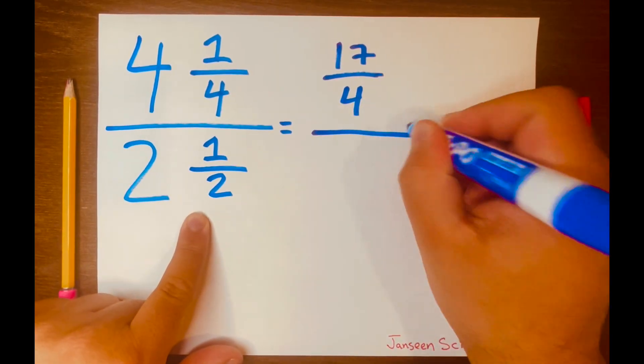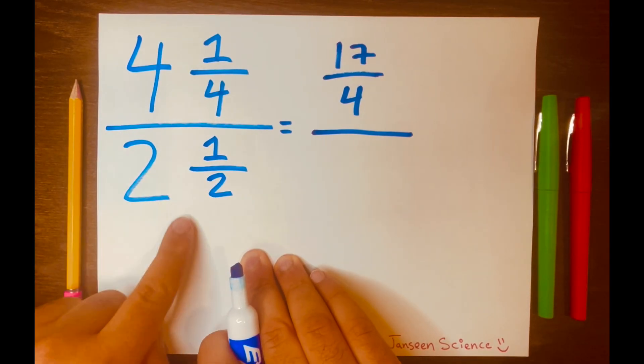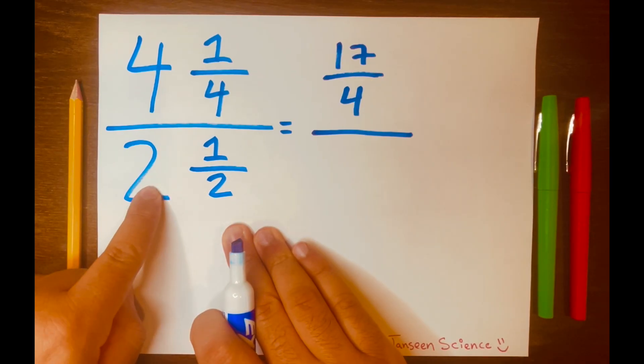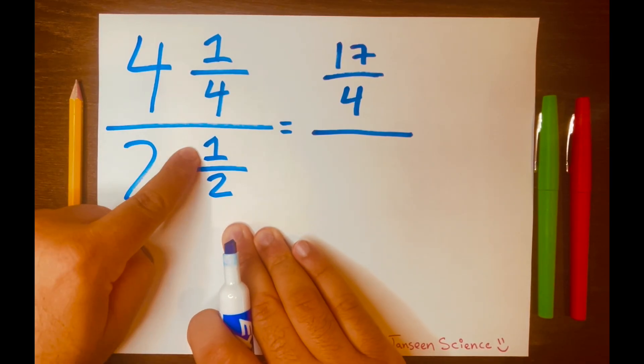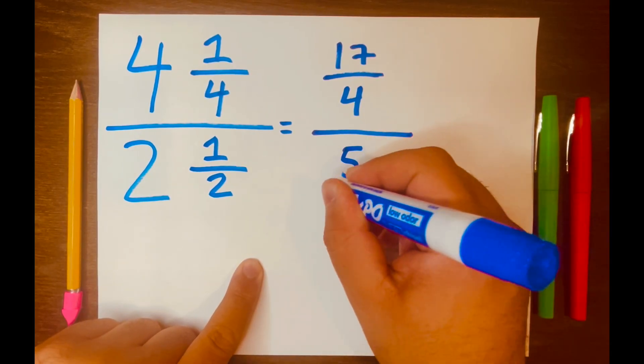And then our division line, and then 2, 1 over 2. Let's turn that into an improper fraction. So 2 times 2 is 4, plus 1 is 5. So we write 5 over 2.